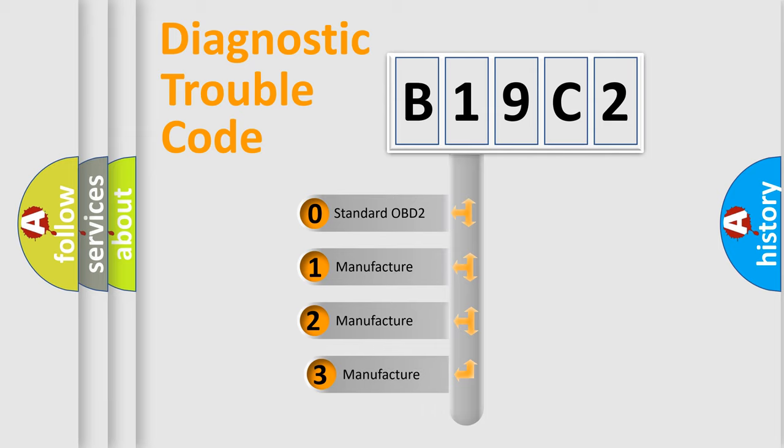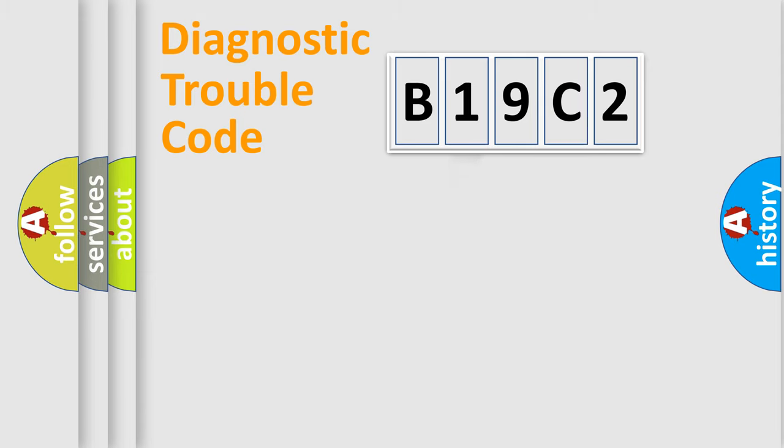If the second character is expressed as zero, it is a standardized error. In the case of numbers 1, 2, or 3, it is a manufacturer-specific error expression for the car.